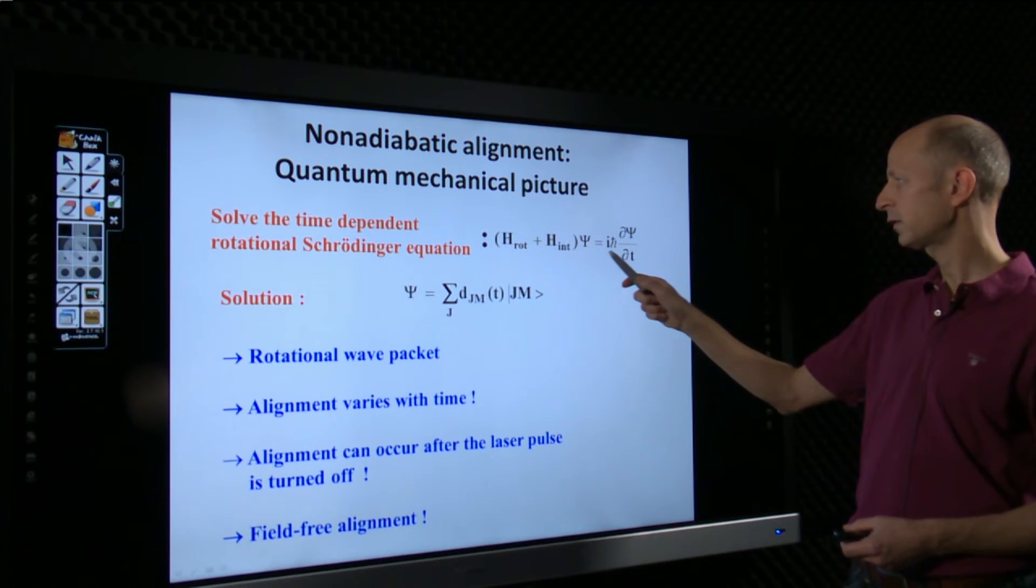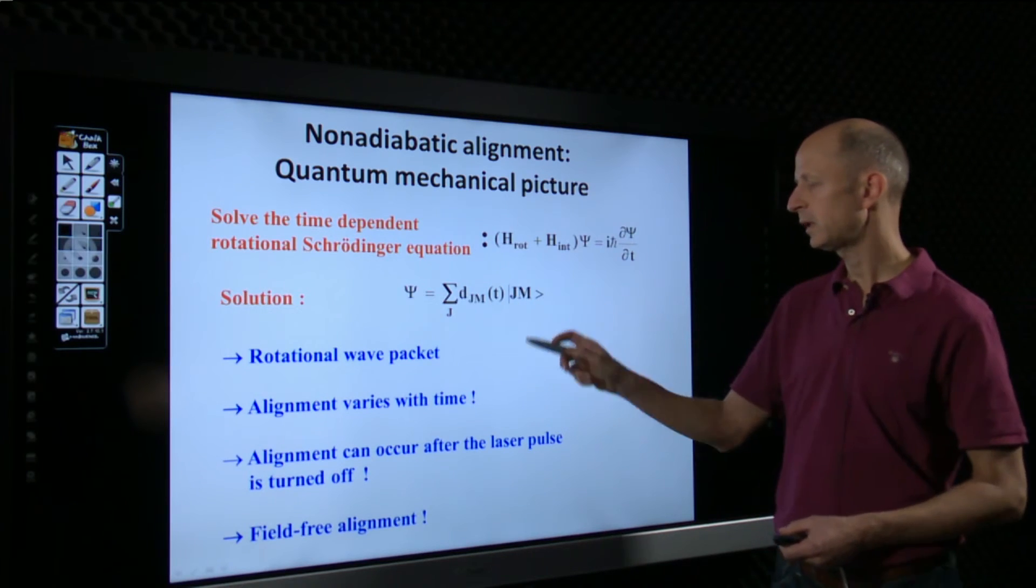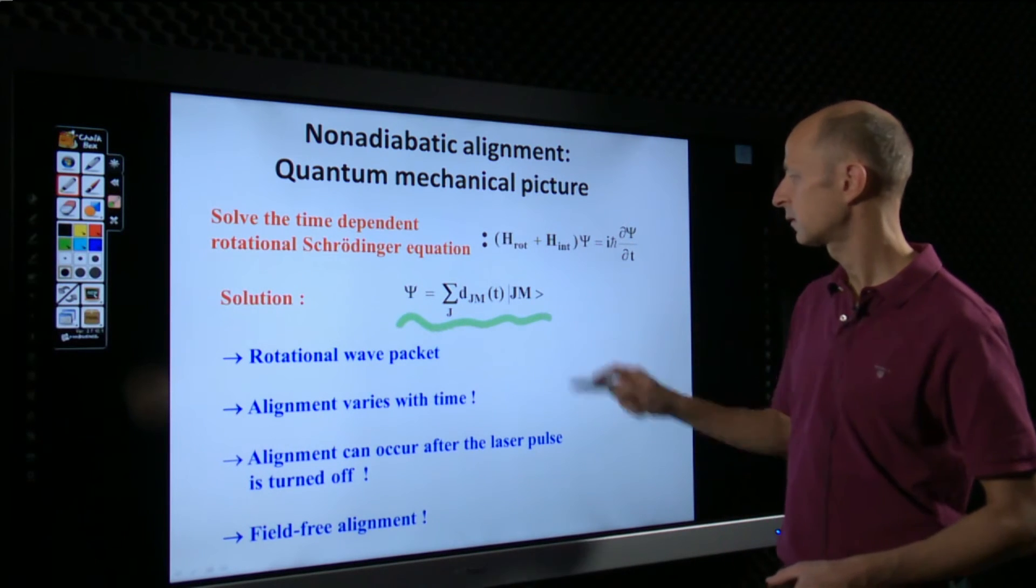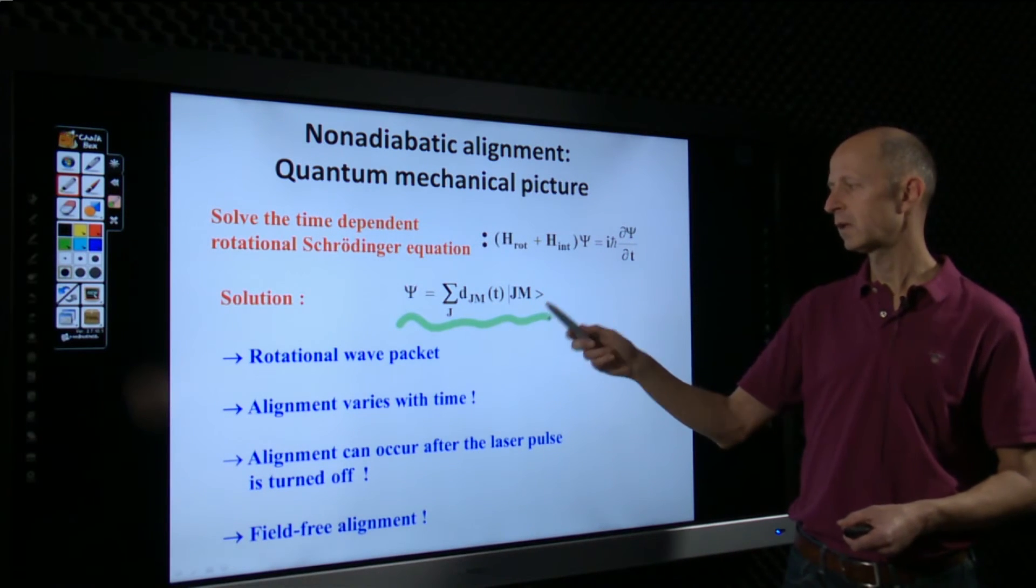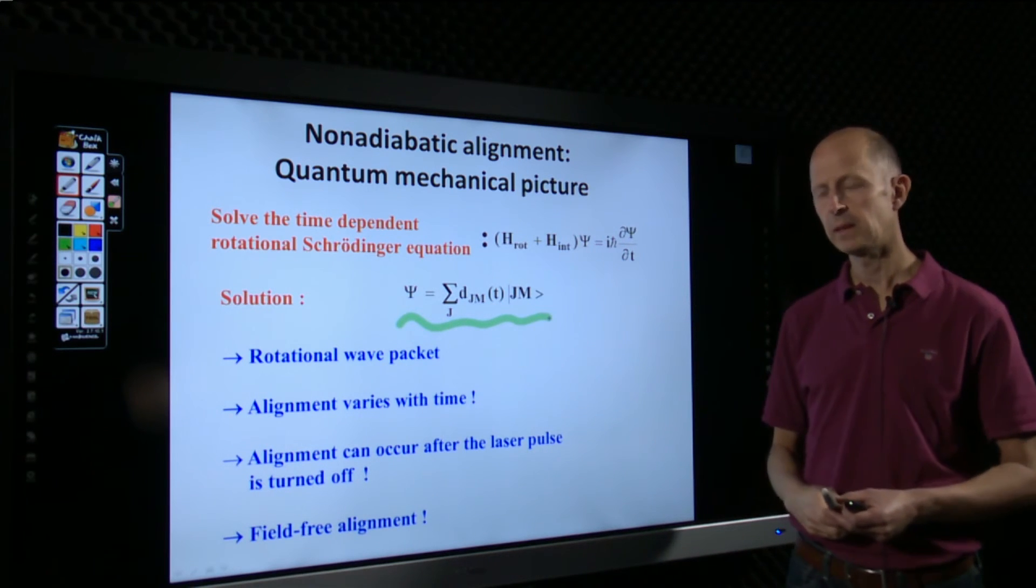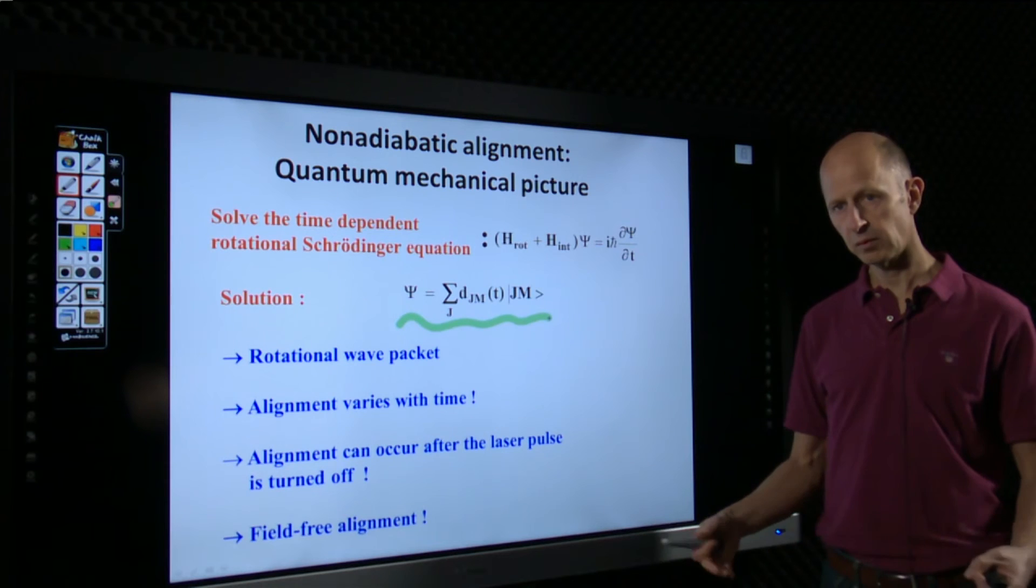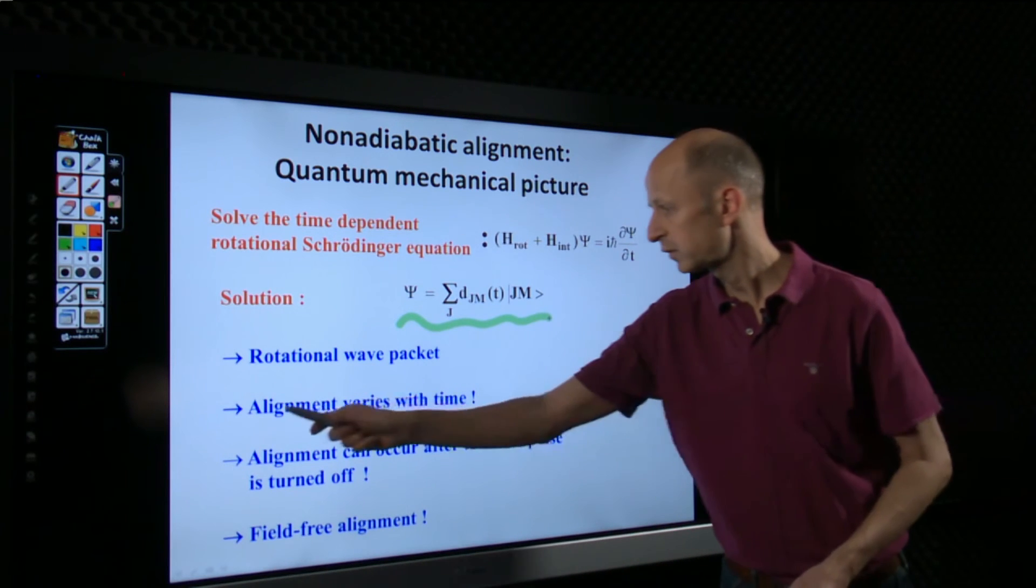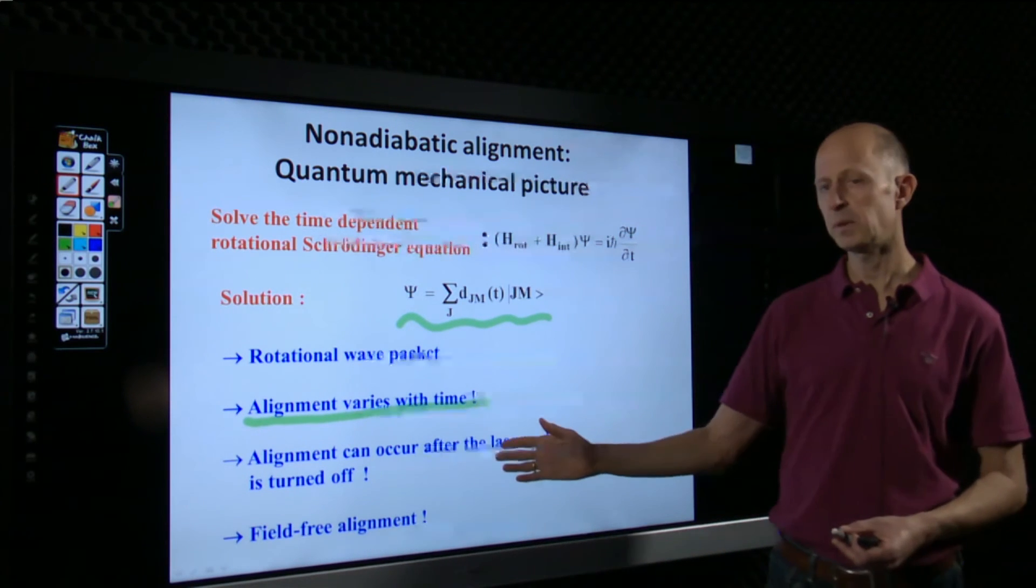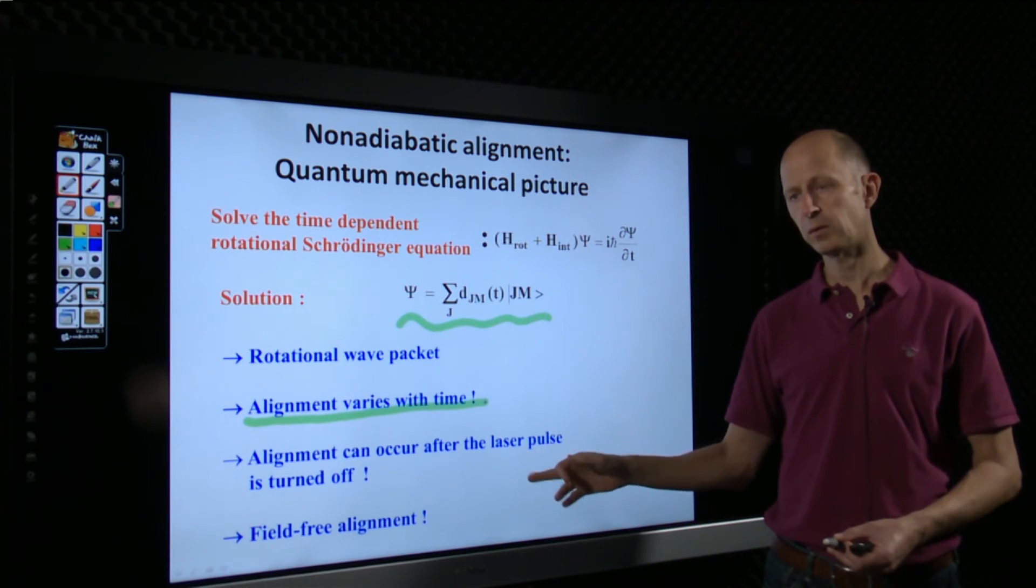Quantum mechanically, this is expressed by solving not the stationary, but the time-dependent Schrödinger equation. It's written here. It's the same interaction operator as we saw before. And again, the solution can be expressed as a superposition of field-free states, but with the important difference that the expansion coefficients are now time-dependent. This implies that we create a rotation wave packet, and therefore, experimental observables varies as a function of time. In particular, the alignment varies as a function of time. And this implies that there will be an instance of time after the field is turned off, after the laser pulse is turned off, that alignment occurs.